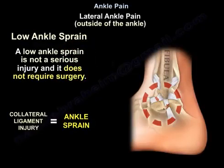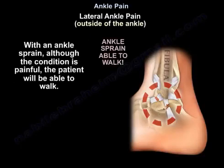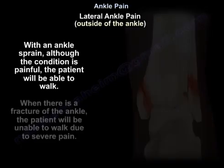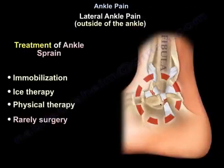A low ankle sprain is a collateral ligament injury. Although the condition is painful, the patient will be able to walk, whereas with a fractured ankle the patient will be unable to walk due to severe pain. Treatment of ankle sprain includes immobilization, ice therapy, physiotherapy, and rarely surgery.